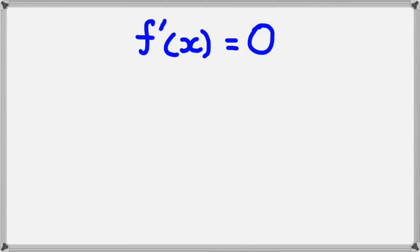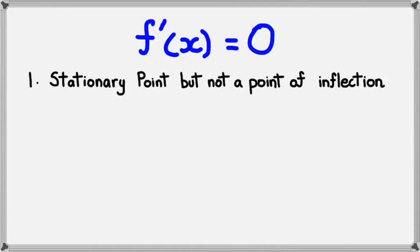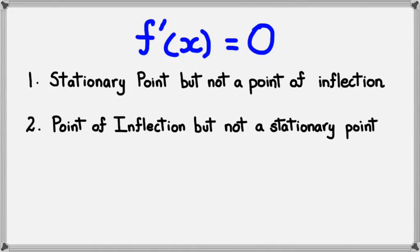Now, you might have learned from previous videos that a stationary point happens when f'(x) is equal to 0. When this happens, there are potentially three situations that could occur. The first one is where it's a stationary point, but it's not a point of inflection.